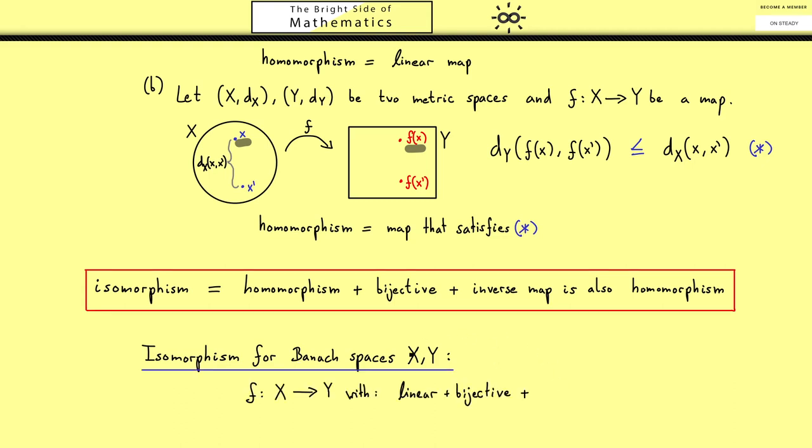However, because we also have the norm, we want to preserve that in the same way as we preserve the metric here. This means that for an isomorphism we have the equality here as well. Because of this confusion that could come in, a lot of people call such a map here an isometric isomorphism.